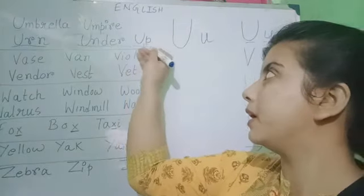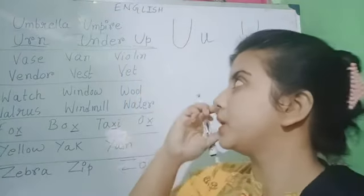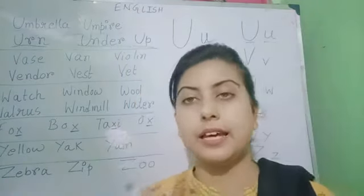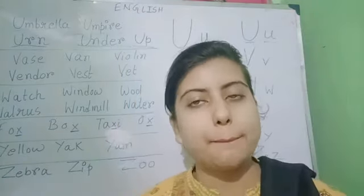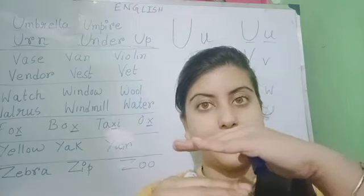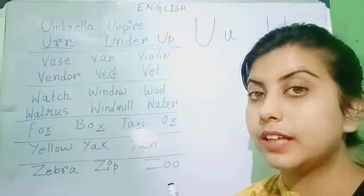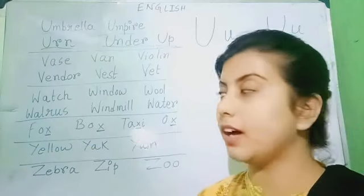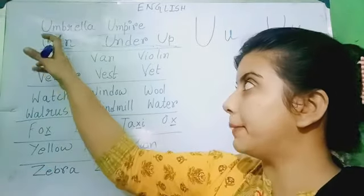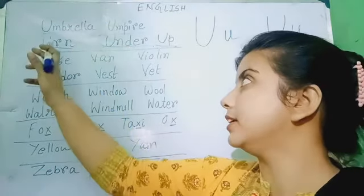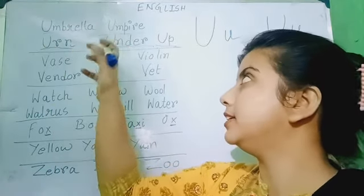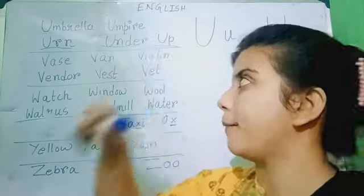Next, we have up. U-P. Up. Up means another position. That is opposite of under — under, up. So the words are umbrella, umpire, earn, under, up.